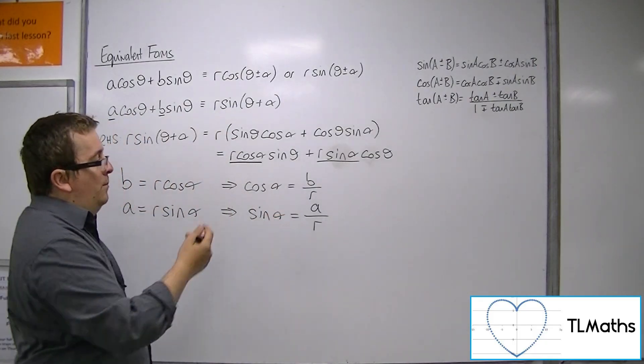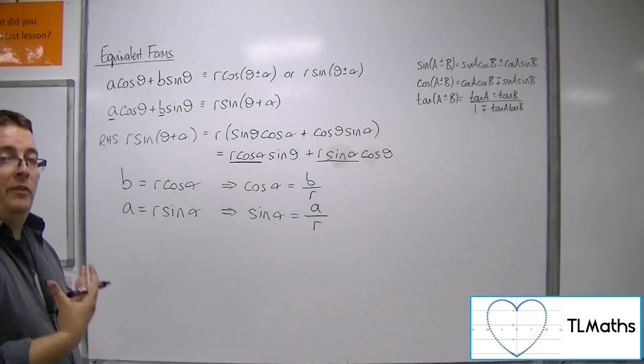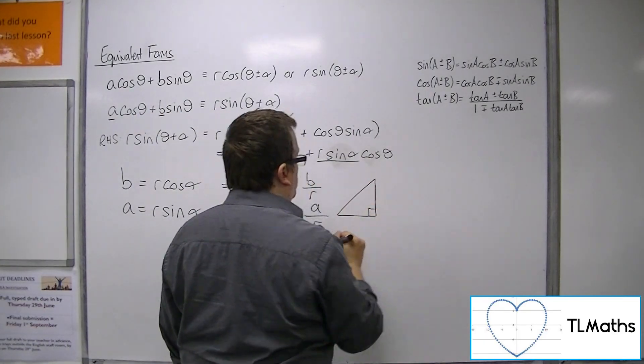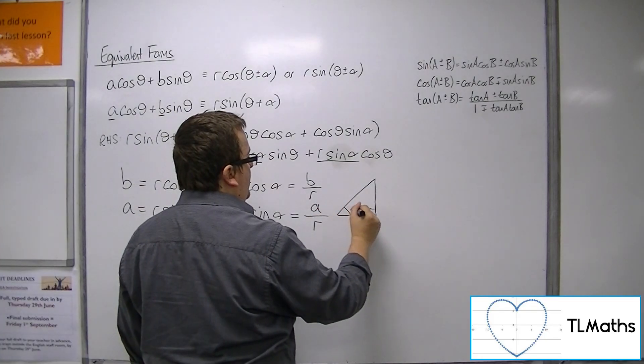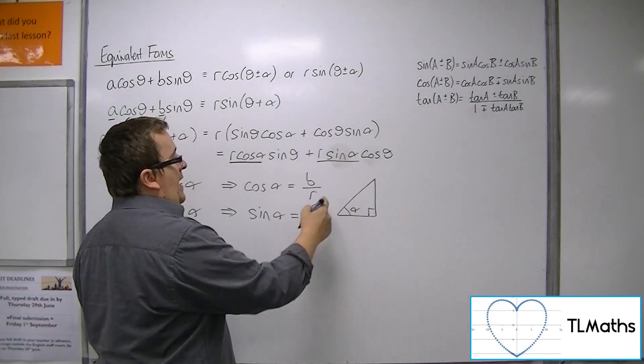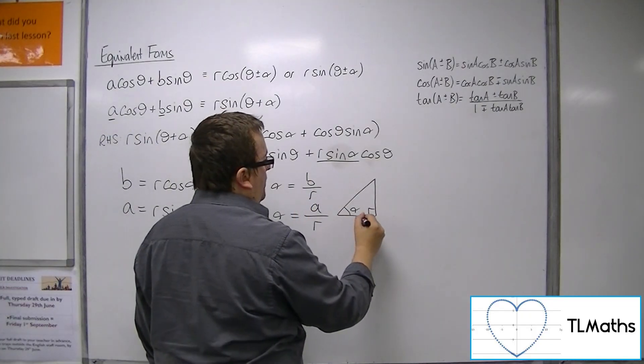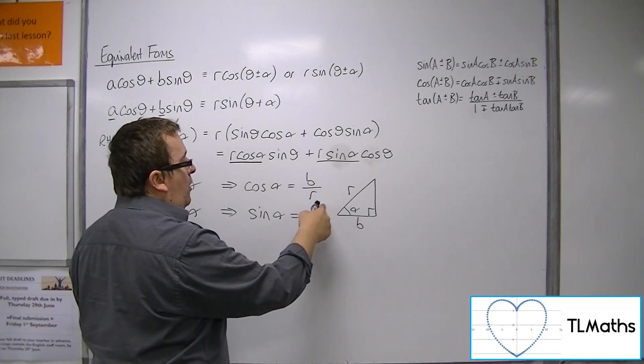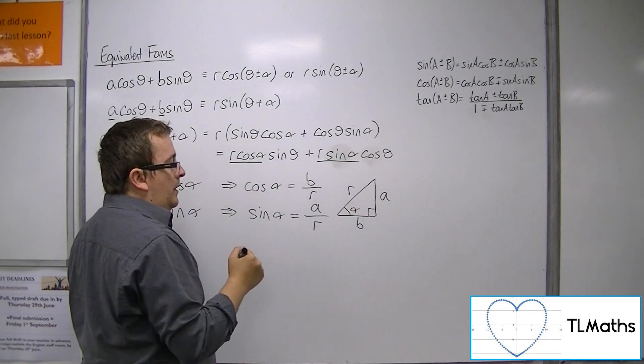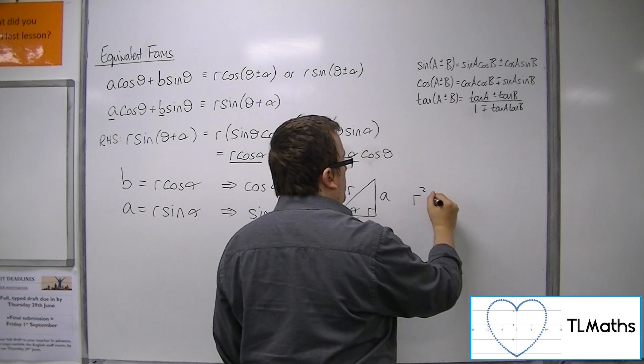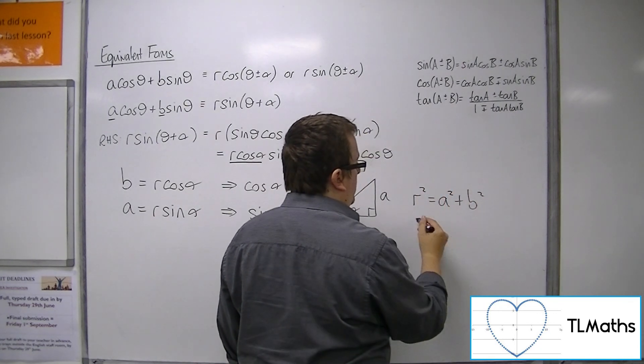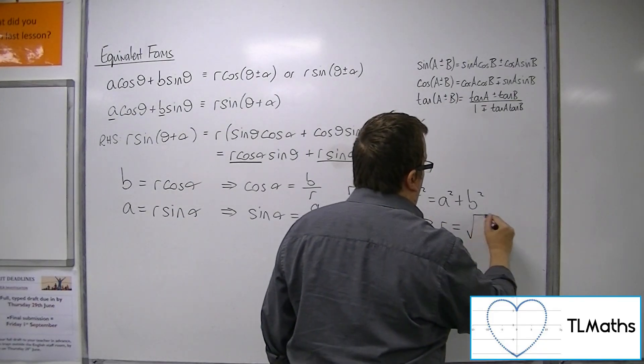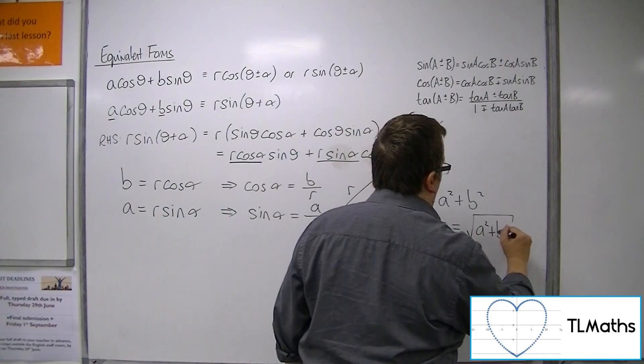Now you could either put both of these into sine squared plus cos squared is 1. Or you could think about drawing a right-angled triangle here and thinking, well, if that's my angle alpha, then b over r must be adjacent over hypotenuse. a over r must be opposite over hypotenuse. And so r squared must be a squared plus b squared. Now as r must be a length here, that means that r is the square root of a squared plus b squared.